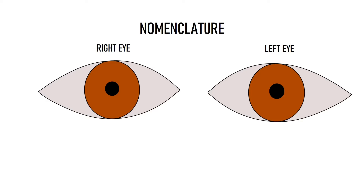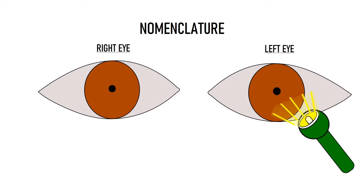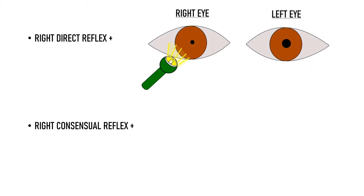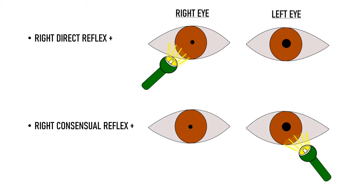Before proceeding further, we need to be absolutely clear about certain terminologies. Suppose in a patient light is shown in the left eye and both pupils constrict. We document it as left direct light reflex present and right consensual light reflex present. The nomenclature is with respect to the eye which is responding to the stimulus, not with respect to the eye receiving the stimulus. So right consensual reflex does not mean that light stimulus is given in the right eye — it means that the pupillary response to light stimulus is seen in the right eye.